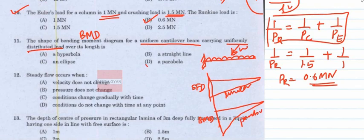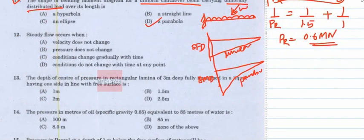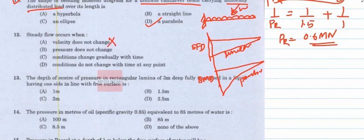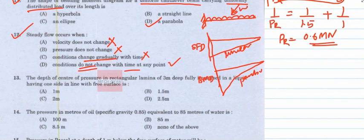Question 11: Steady flow occurs when conditions do not change with time. Option A (velocity does not change) is wrong, option of pressure not changing is wrong, and conditions changing gradually with time is also wrong. Steady flow means conditions do not change with time at any point. The answer is option B.